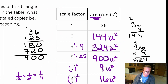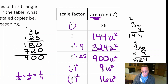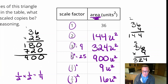It's good to keep in mind that this squaring effect applies to area, not perimeter. For perimeter it's just times 1, times 2, times 3, times 5 — but since it's area, it has a squaring effect. We take the scale factor and square it — that's how many times greater the area is going to be.